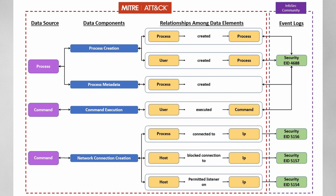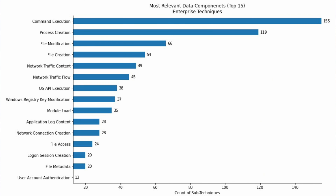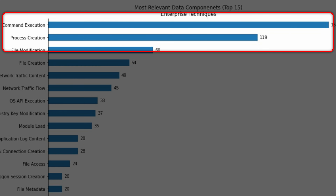When we look at the major data sources per technique, one of the things we're going to notice is that command execution and process creation account for most of the sub-techniques in the MITRE ATT&CK framework. This means that by just having command execution and process creation logging, we're able to track a large gamut of behavior that an attacker can be taking on our systems. So this is quite important and great for us.